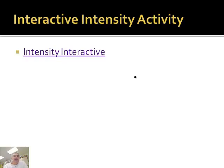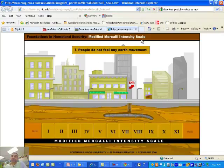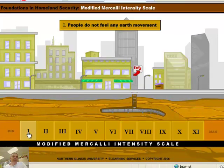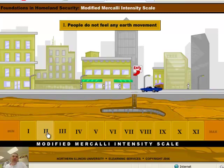Let's take a look at a cool intensity interactive. Here we have the modified Mercalli intensity scale. If an earthquake happens — let's watch. Number one: people do not feel the Earth movement. They're just walking around. Cars driving by. Not a big deal.